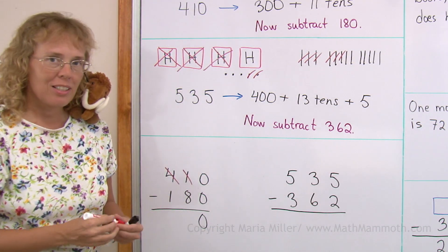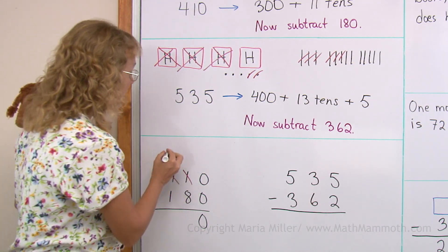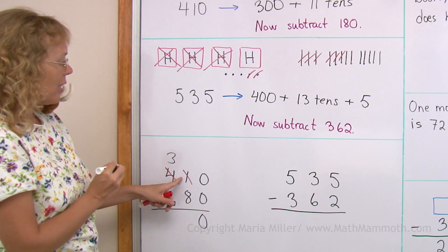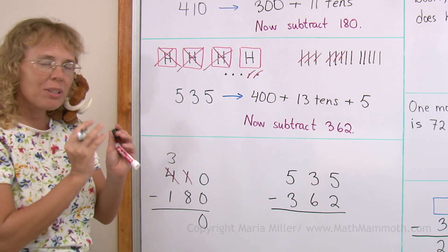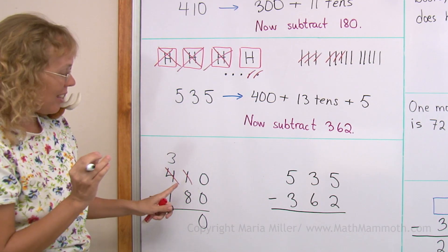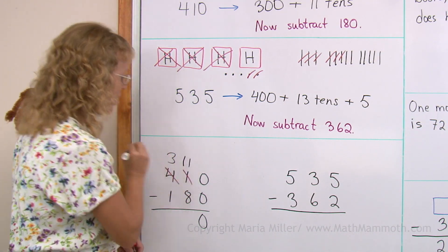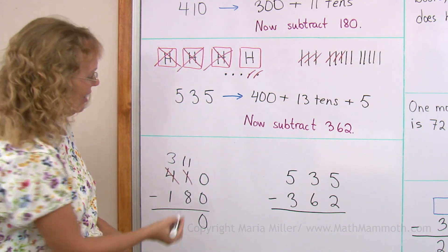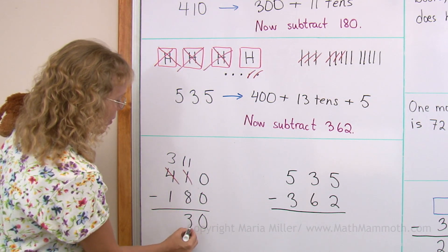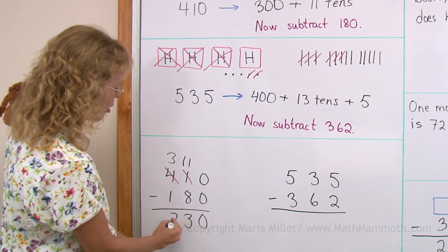So I take one of the hundreds. That leaves three hundred here. And over here in the tens, that hundred becomes ten tens. And there is one ten. So a total of eleven tens here. And now I can subtract. Eleven minus eight. Three and then three minus one is two.